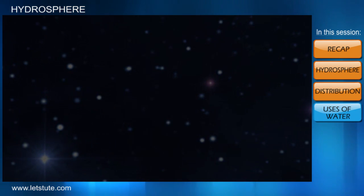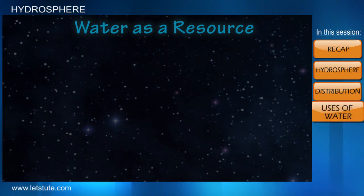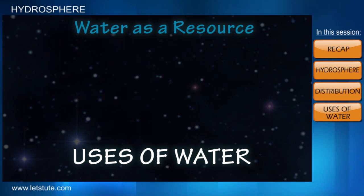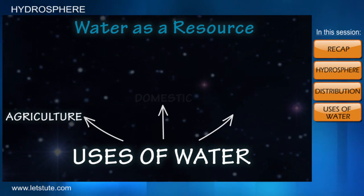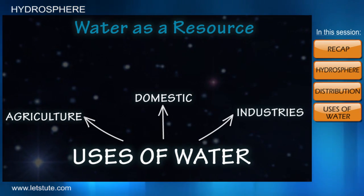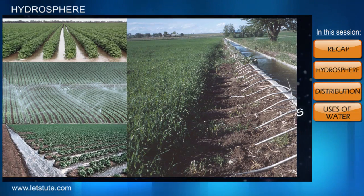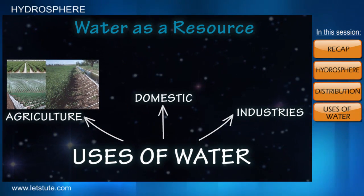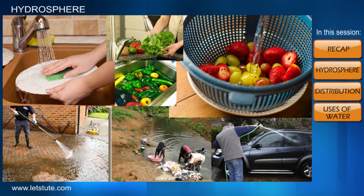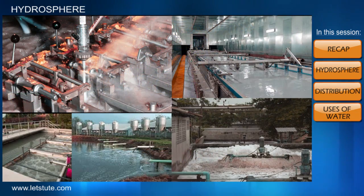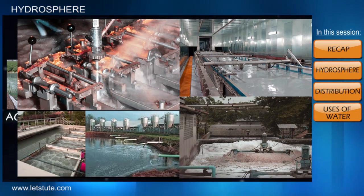Now let's look at how water acts as a resource to us. We call water an important resource as we use it for various purposes, and we can divide this into three different uses: agricultural use, domestic use, and industrial use. Crops require water for their growth, and we provide this water to our fields through proper irrigation facilities. Domestic use implies water required for household purposes like drinking, washing, cooking, and watering plants, which reaches our homes through various distribution systems. Industries require a huge amount of water at various levels of operations.